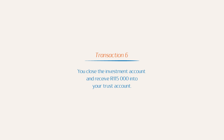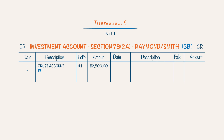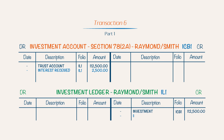Transaction 6: You close the investment account and receive an amount of R115,000 into your trust account. This transaction is recorded in three parts. Part 1: You record the interest received on the investment. You debit the investment account with the interest received. The interest received is R2,500, calculated as R115,000 minus R112,500. You then credit the investment ledger of Raymond/Smith with R2,500.